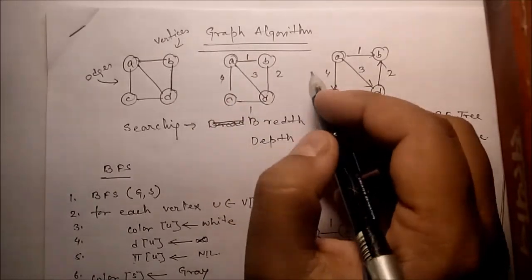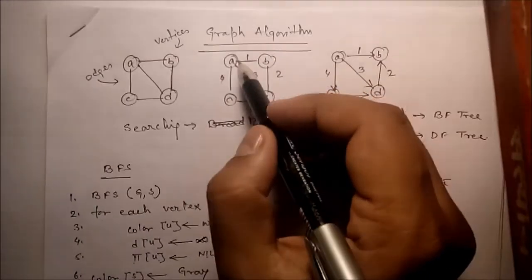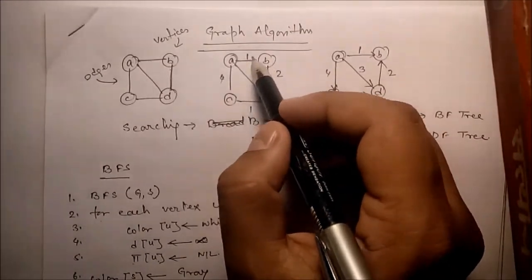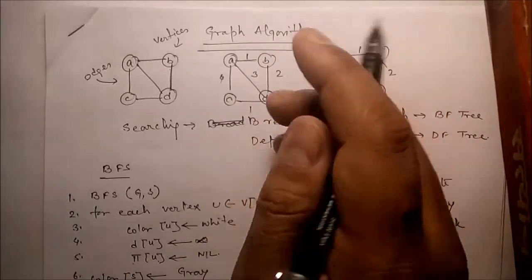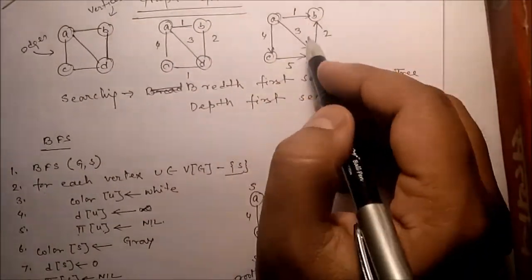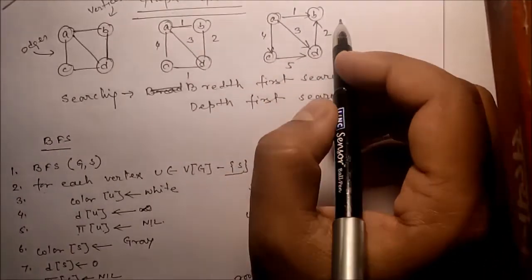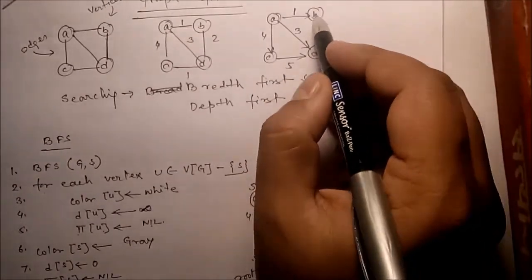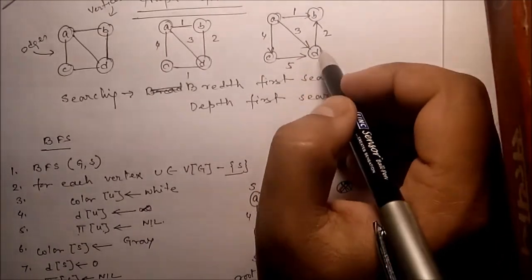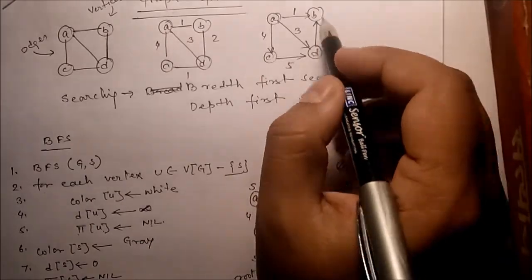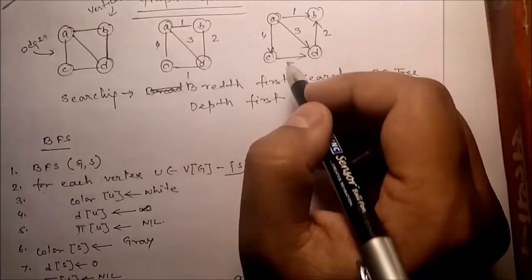A to D is 3. This is an undirected graph because A to B is 1 and B to A is also 1, B to D is 2 and D to B is also 2. But in a directed graph, A to B is 1 but B to A is not 1. Similarly B to D is infinite but D to B is 2, C to D is 5 but D to C is not 5.